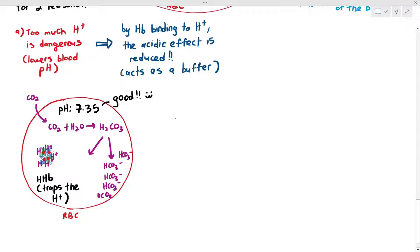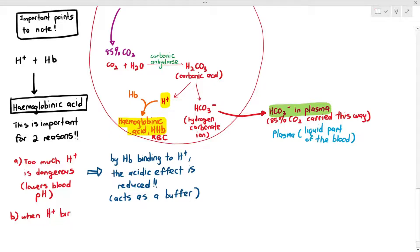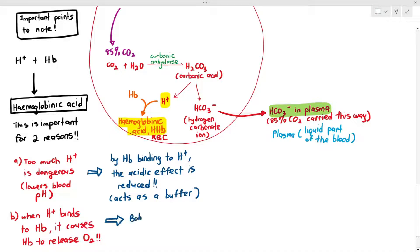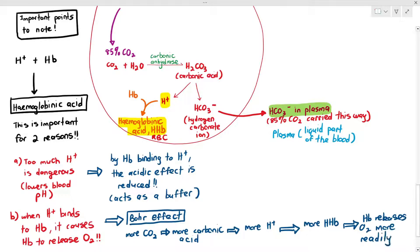You don't need to memorize that blood pH is 7.35, but it's good to know that when you have more CO2, it makes the blood more acidic. The second reason hemoglobinic acid formation is important: when hydrogen ions bind to hemoglobin, it causes the hemoglobin to readily release oxygen. You may recognize this — it's called the Bohr effect or the Bohr shift. The Bohr effect states that when you have more CO2, it leads to more carbonic acid, which leads to more hydrogen ions, which leads to more formation of hemoglobinic acid, and it forces the hemoglobin to release its oxygen.